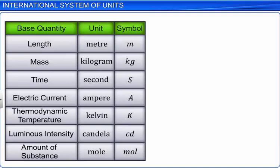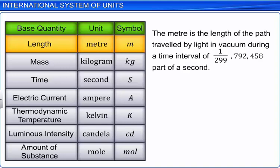Length is measured in meters, denoted by the small letter m. Meter is the length of the path traveled by light in a vacuum during a time interval of approximately 300 millionth of a second.